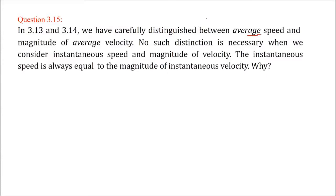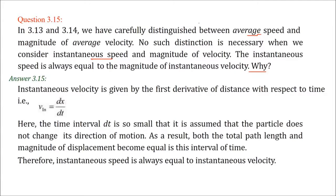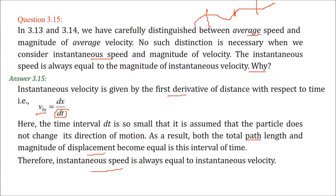No distinction is necessary between instantaneous speed and the magnitude of instantaneous velocity. The instantaneous velocity is dx/dt, where dt is so small that the particle cannot change direction in that interval. Both path length and magnitude of displacement become equal over such a tiny interval. Therefore, instantaneous speed always equals the magnitude of instantaneous velocity.